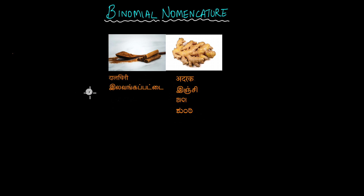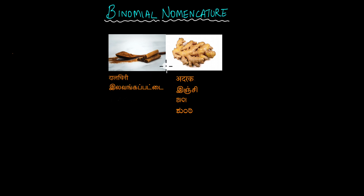Say if you are a person who speaks Hindi but not any other language. If you want to convey to another person that you are talking about cinnamon, and your brain goes on a brain freeze and you are not able to figure out the English word, how would you be able to communicate to them?